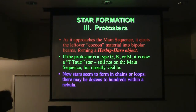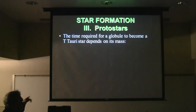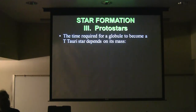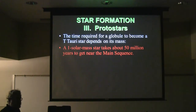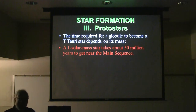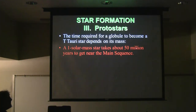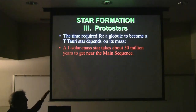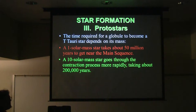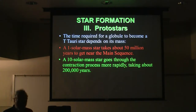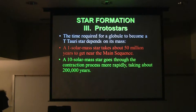How long does all of this take? For a Bok globule to become a T Tauri star depends on its mass, and it may be backwards from the way you think: the more massive it is, the faster it goes. A one solar mass star — like the sun — took about 50 million years to condense out of a nebula and get almost onto the main sequence. A ten solar mass star, which will become a blue giant, goes through the same process much more rapidly and only takes 200,000 years. Only in astronomy can you say 'only 200,000 years' and mean something relatively fast.